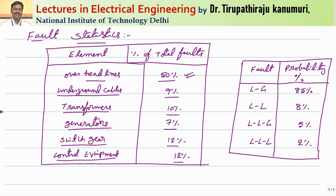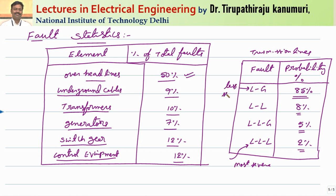Overhead lines have the highest percentage, so more care should be taken for protection of transmission lines. Out of transmission line faults, line to ground faults contribute 85 percent of cases, line to line faults are 8 percent, line to line to ground are 5 percent, and triple line (balanced) faults are only 2 percent. Triple line faults are the most severe but happen very rarely, while line to ground faults are least severe but happen most often, requiring careful protection.